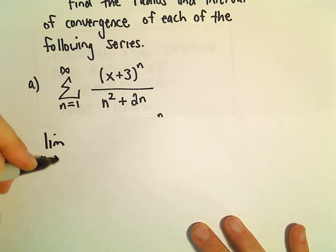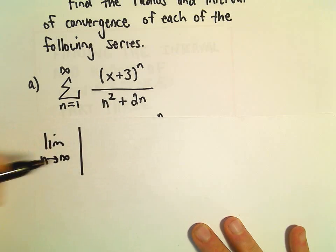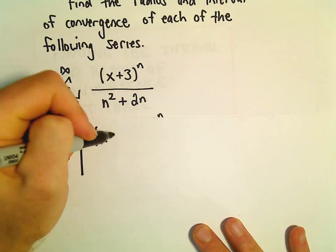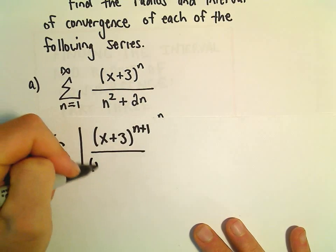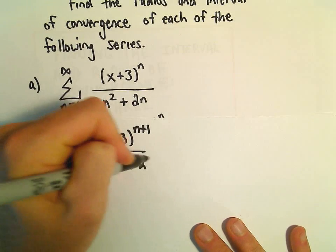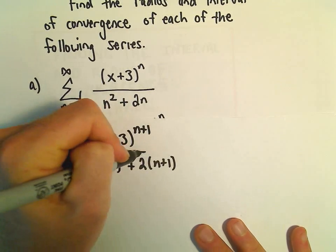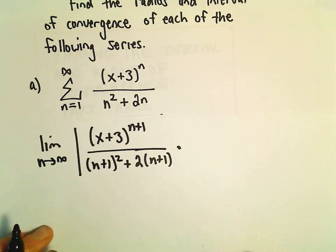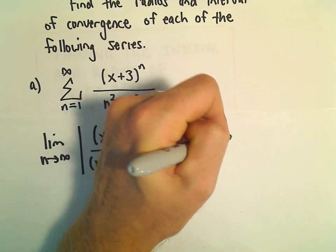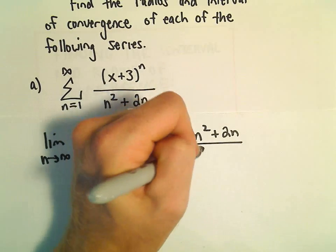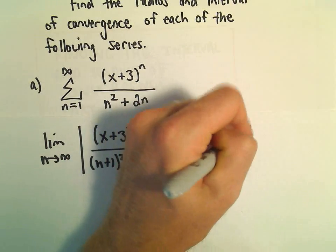So, again, just going to use the good old ratio test. So, the limit as n goes to infinity, we'll have x plus 3 to the n plus 1, n plus 1 squared plus 2 times n plus 1. And then we'll multiply by the reciprocal, so n squared plus 2n over x plus 3 to the n.